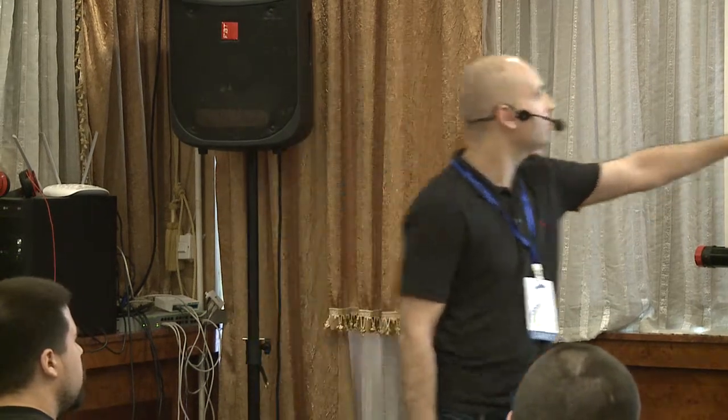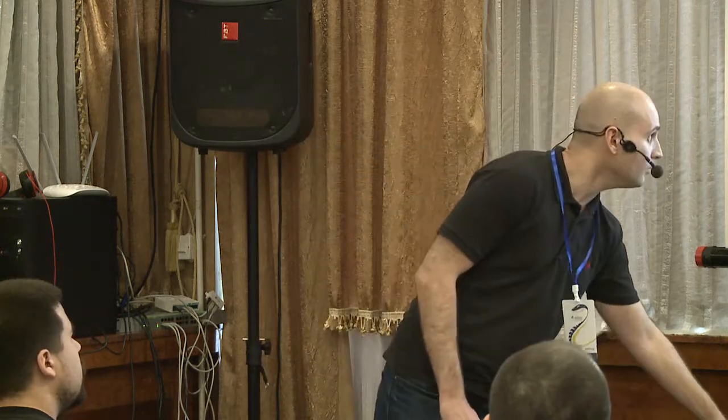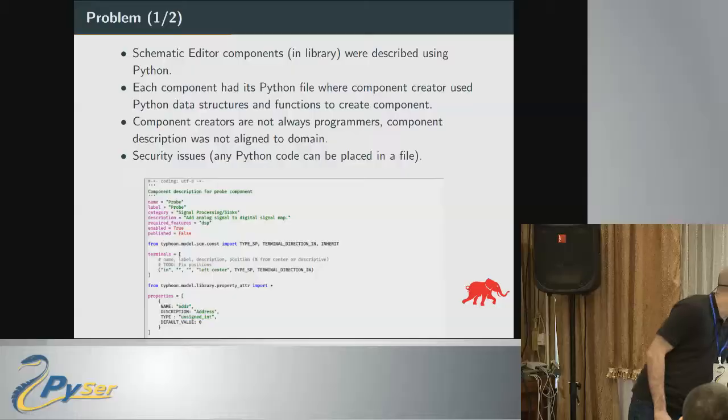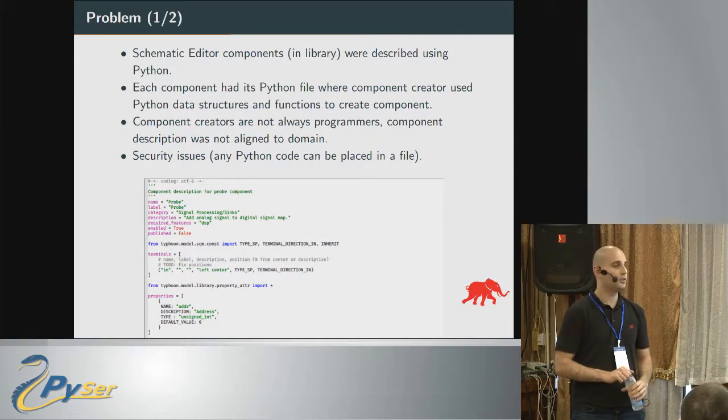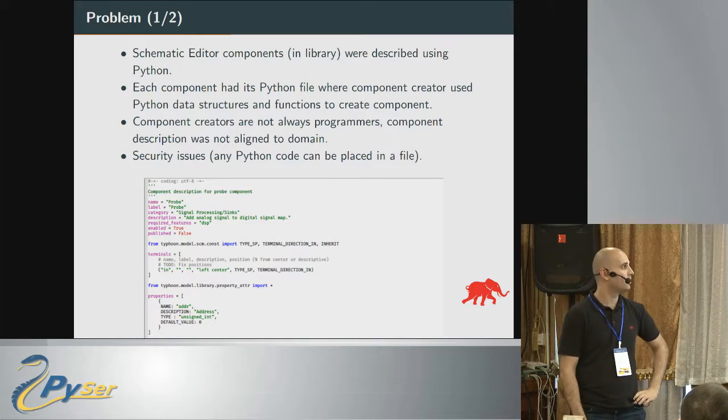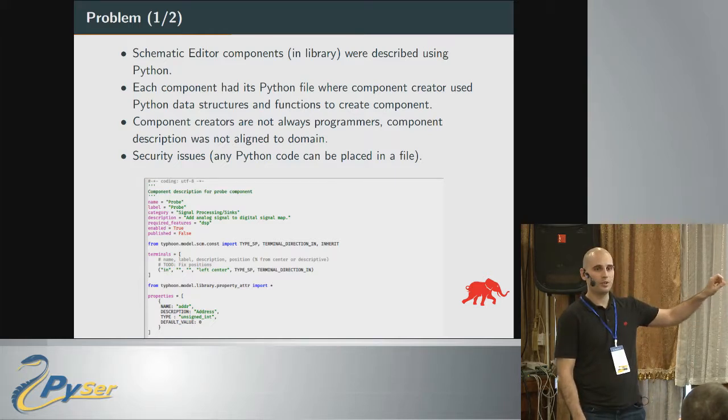How do they make these models? They just combine components from a library and use connections and other elements to specify their model. And this is the beginning of the problem. These components need to be defined in some way. In the beginning, these components were defined using Python itself, so every component has its own file where users define component attributes.